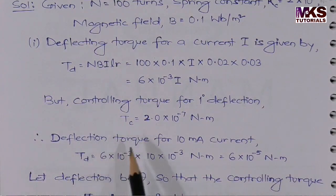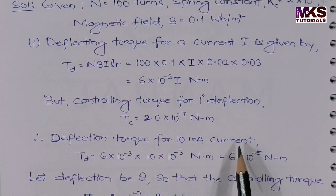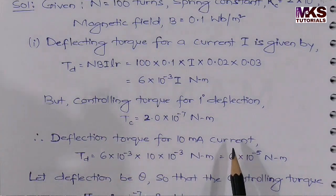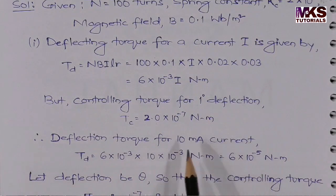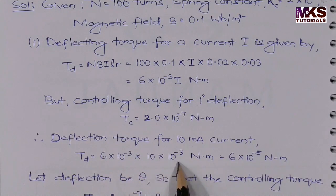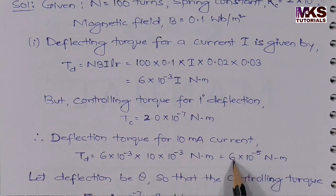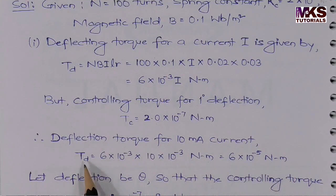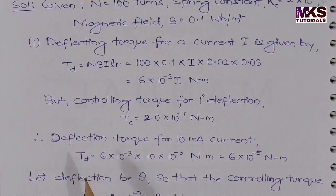The question asks for deflection for 10 milliampere DC and 10 milliampere AC. For 10 milliampere current, substituting I = 10 × 10⁻³: TD = 6 × 10⁻³ × 10 × 10⁻³ = 6 × 10⁻⁵ Newton meter. This is the deflecting torque for 10 milliampere current.